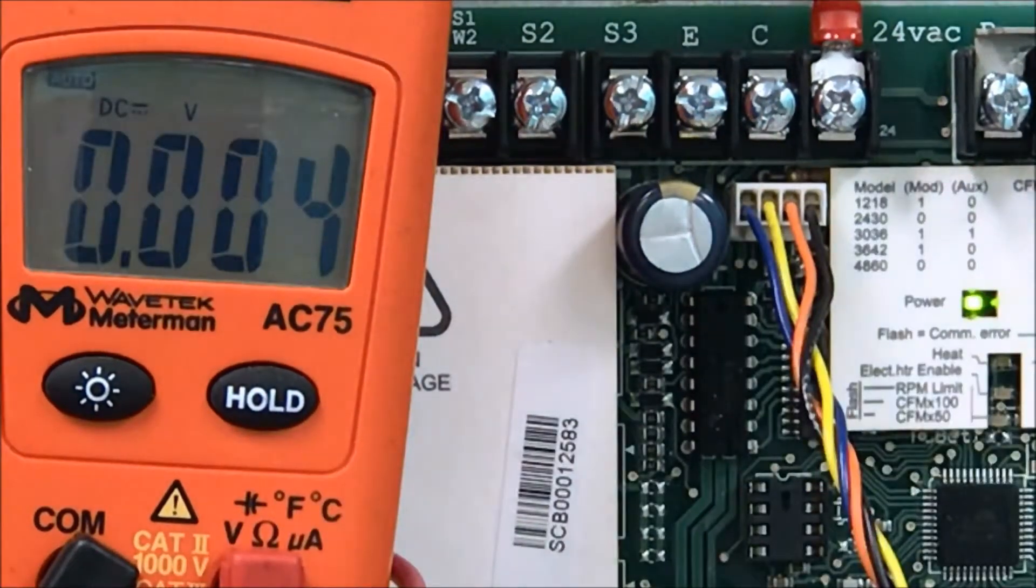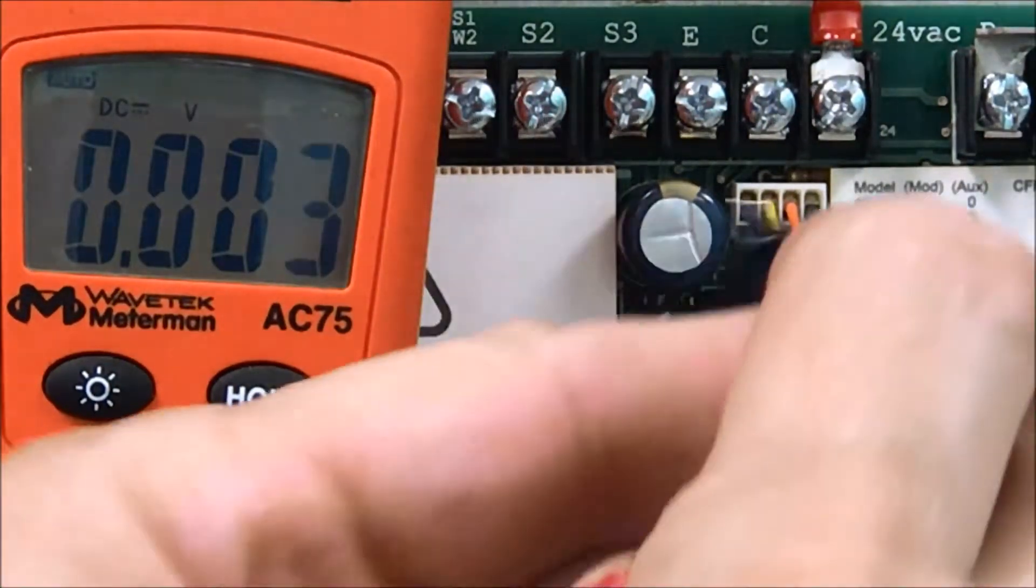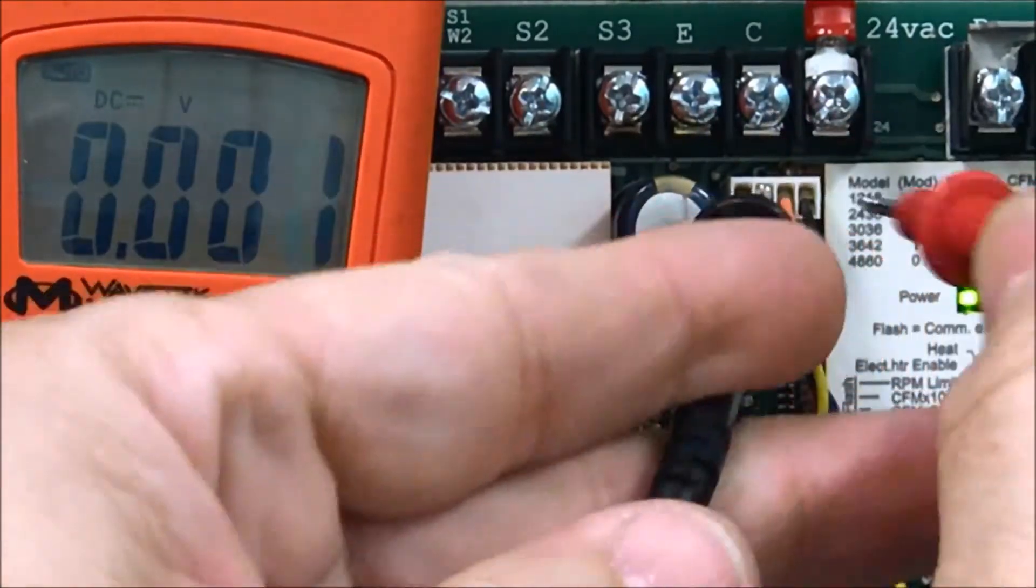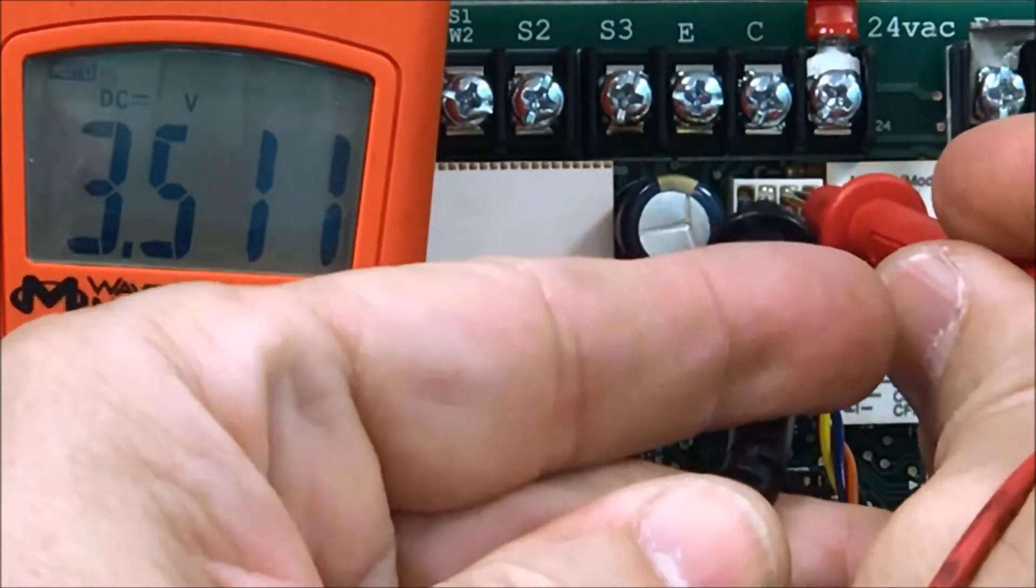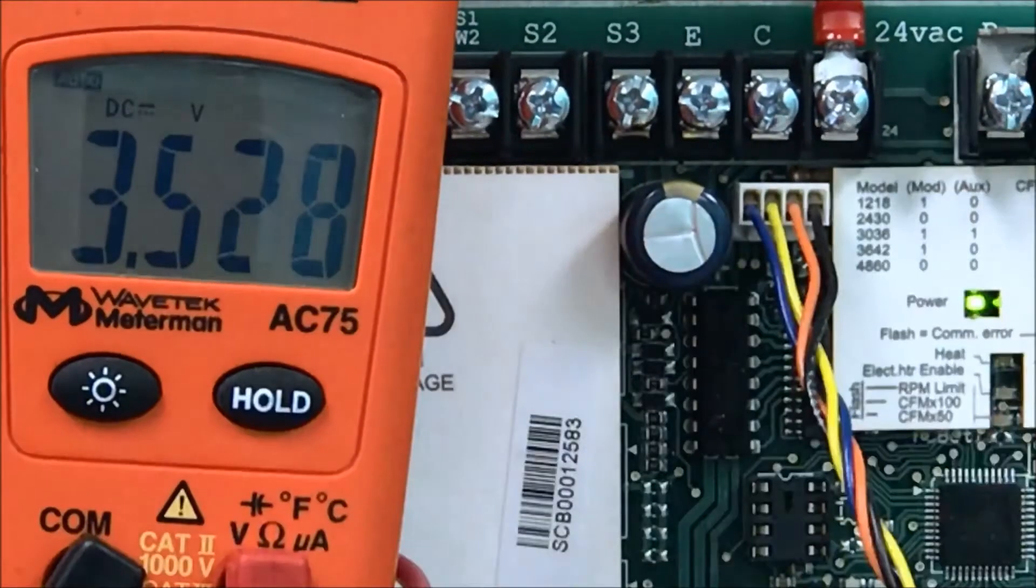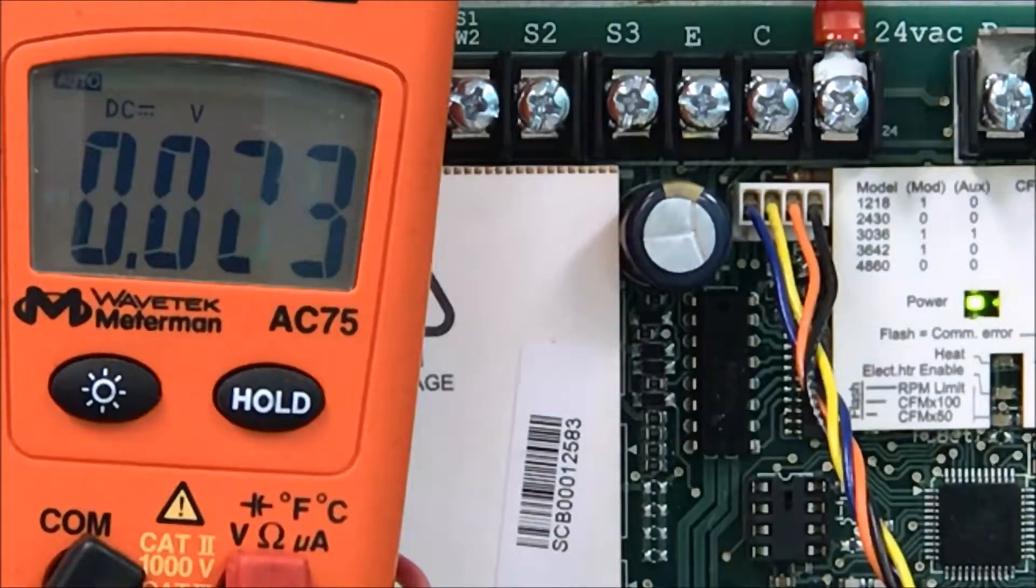Then we're going to check the yellow and the orange. When we check the yellow and the orange, we should have 0 to 5 volts DC. Now if you don't have these values, replace the board.